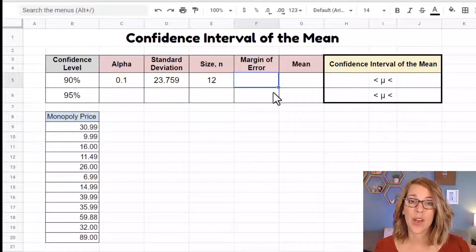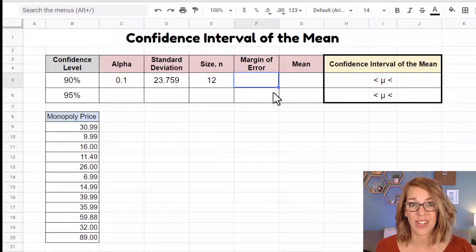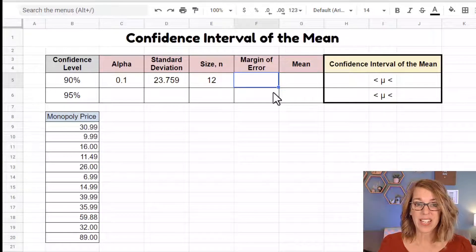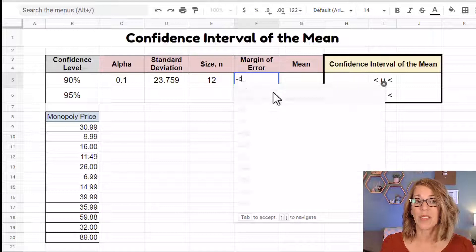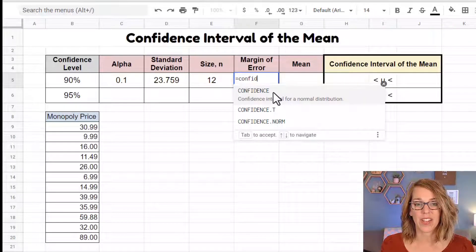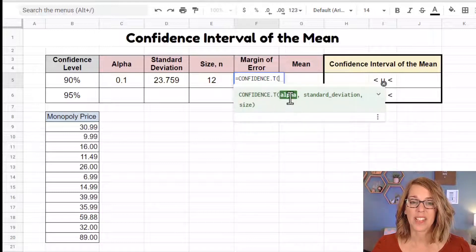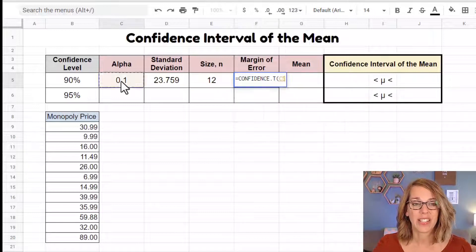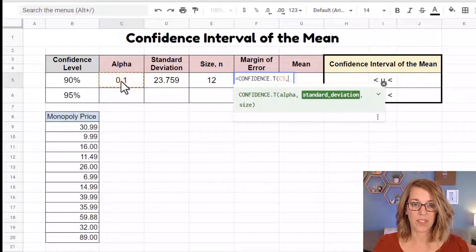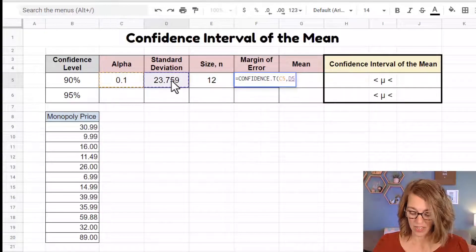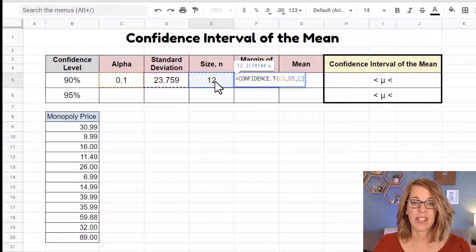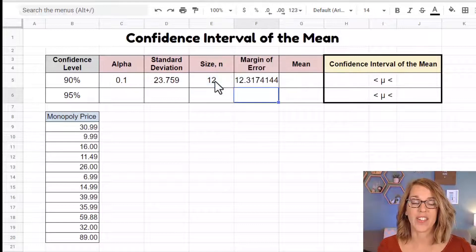This is what Google Sheets and Excel will give you when you use the confidence interval function. So I'm going to hit equals, and then I'm looking for the confidence function. So confidence, and this is going to be for a sample. So I'm going to choose confidence dot T and it wants alpha, standard deviation, and size, which is exactly what I've got over here to the left. So I'm going to click on my alpha value followed by comma, standard deviation followed by comma, and then my size. And then I'll hit enter.